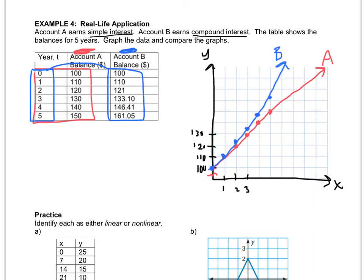So account B would be an example of nonlinear. Account A would be an example of linear because account A has a constant rate of change. And if I were to use some knowledge about slope, I would say that the slope here starts getting steeper because it seems like it's going to increase a little quicker. So that would be an example of nonlinear.